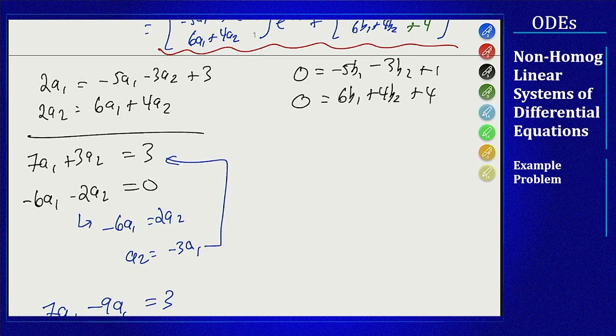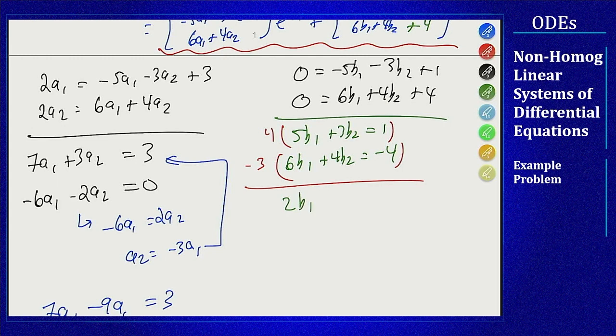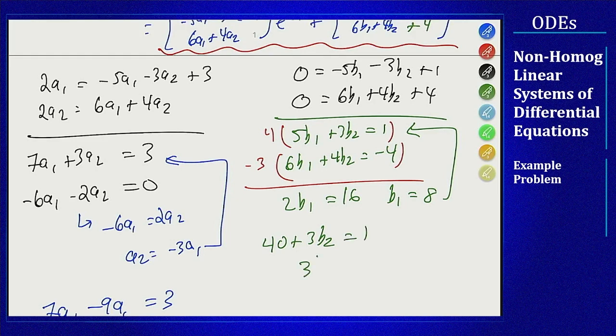Putting all the b terms on to the left side gives me 5b1 plus 3b2 equals 1, and 6b1 plus 4b2 equals minus 4. I'm going to multiply this by 4, this by 3, and subtract. If I do that I will see 20b1 minus 18b1 is 2b1, 12b2 minus 12b2 is 0, 4 plus 12 is 16. So b1 equals 8. And then putting that up into here tells me that 40 plus 3b2 equals 1, 3b2 is minus 39, b2 is negative 13.